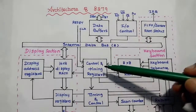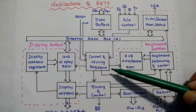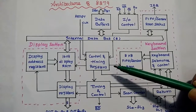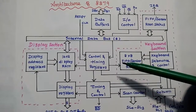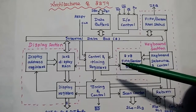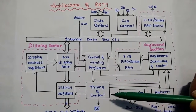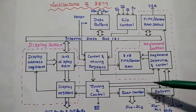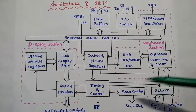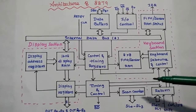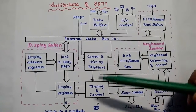The next one is the Control and Timing Registers, which are mainly used to store the command and write status information for controlling the overall operation of 8279. The Timing and Control unit is mainly used to send the control signals to all the functional units of 8279. This completes the CPU Interface Unit.